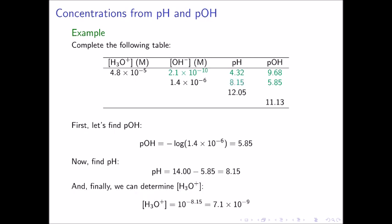And finally, we can calculate the concentration of hydronium ion from the pH. In this case, the hydronium ion concentration is equal to 10 to the negative pH, or 10 to the negative 8.15, which is equal to 7.1 times 10 to the negative 9 molar.